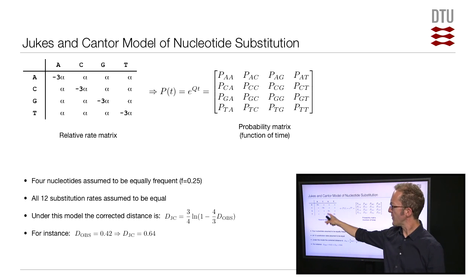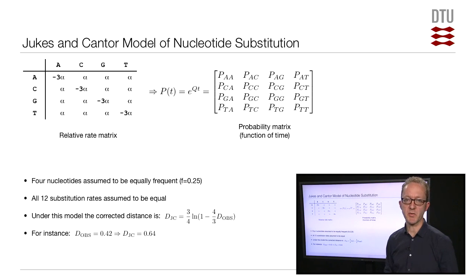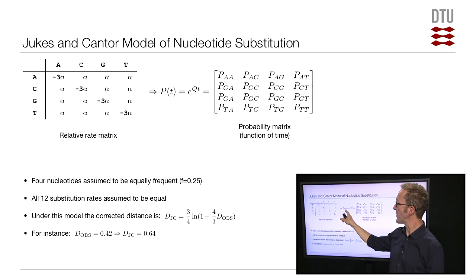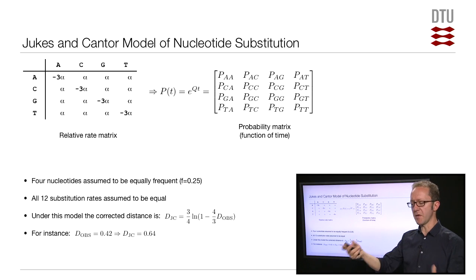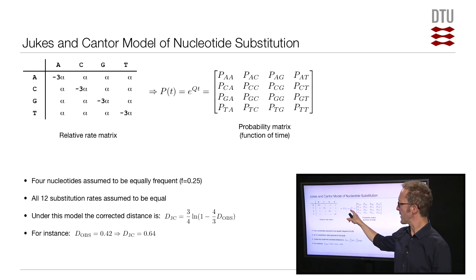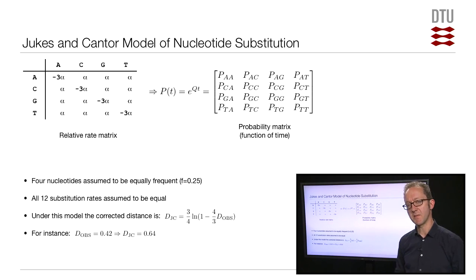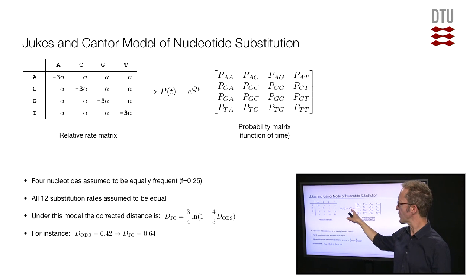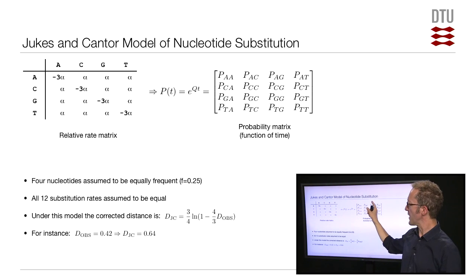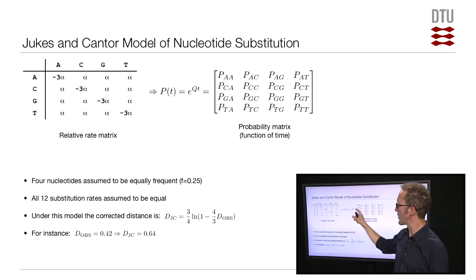If you have a relative rate matrix like this, it's possible to compute substitution probability matrices. A substitution probability matrix gives you the probability that any nucleotide will change to any other nucleotide for a specific time span — if you wait 10 million years, there's some probability that A will change to C; if you wait 100 million years, there's a larger probability. You can derive the substitution probability matrix from the rate matrix using matrix exponentiation.